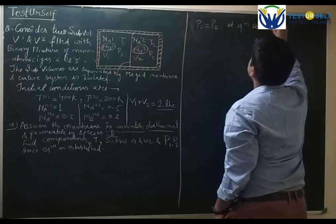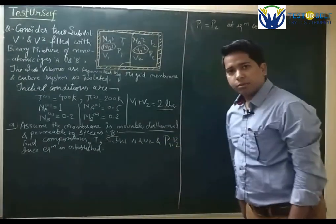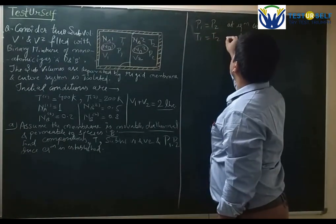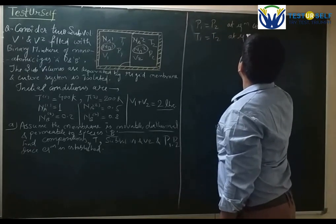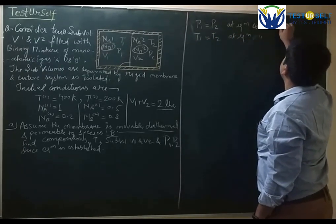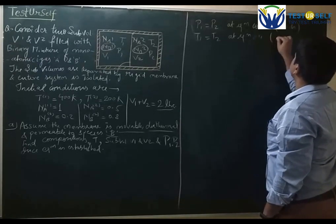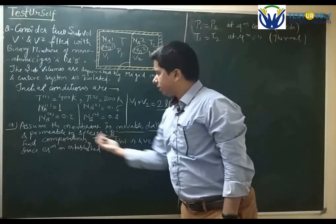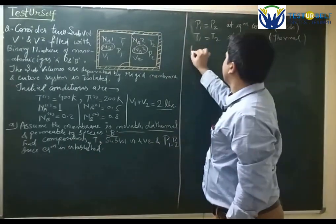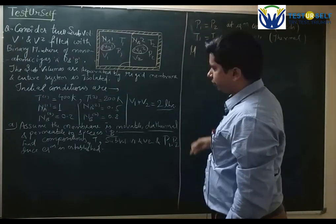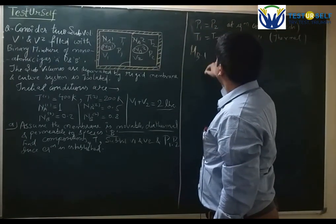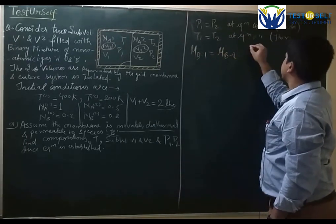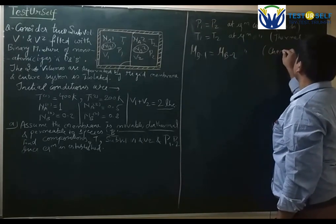This comprises mechanical equilibrium. As the boundary is diathermal, the temperature on the left will equal that on the right at equilibrium — this is thermal equilibrium. And as it is permeable to species B only, the chemical potential of species B on the left equals the chemical potential of species B on the right — this is chemical equilibrium.